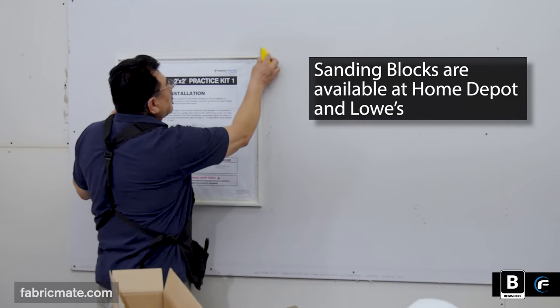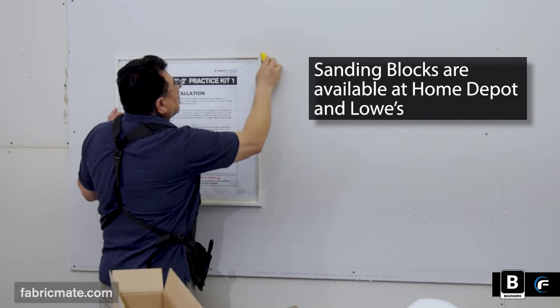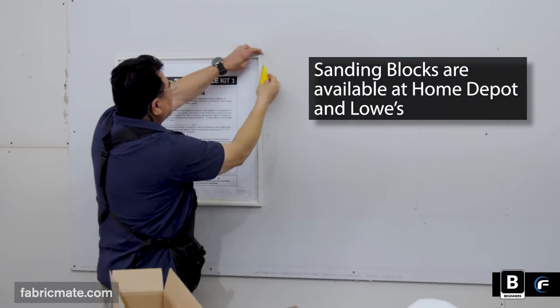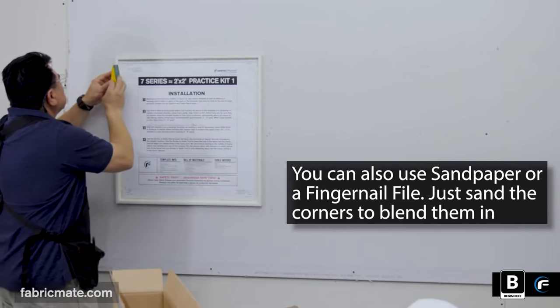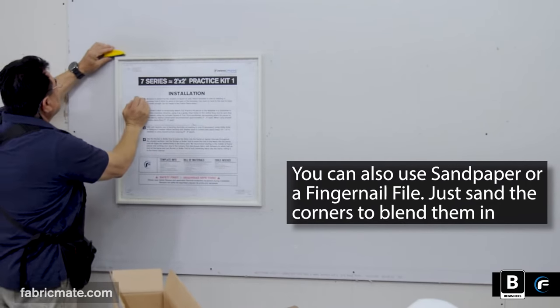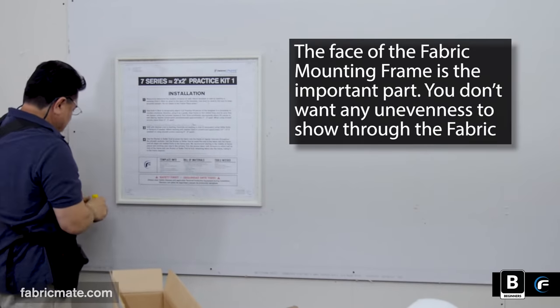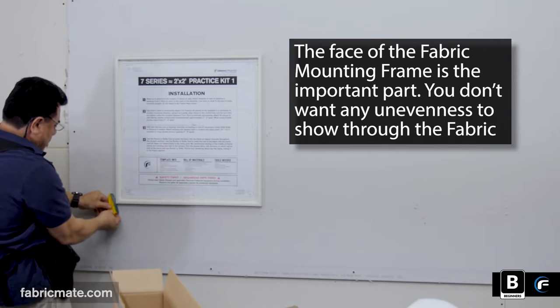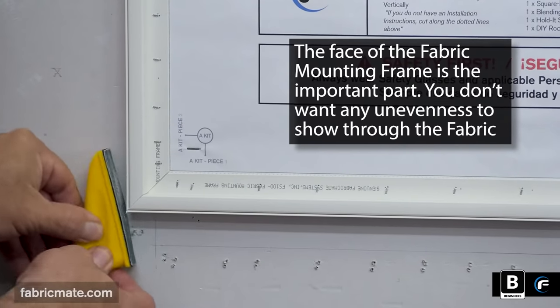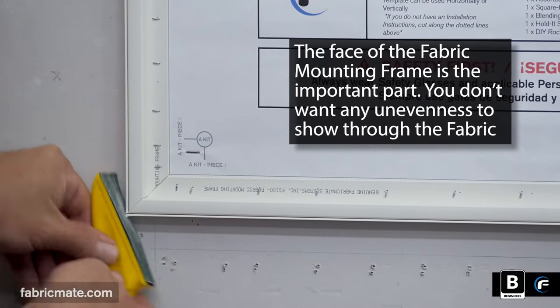Now he's taking the little sanding block. These are readily available at your Home Depot or Lowe's. You can use sandpaper, a fingernail file, whatever you may have around. You just want to go ahead and hit the corners. Make sure that they're blended in. The face of the fabric mounting frame is the important part. You don't want to have any unevenness that might show through the fabric.